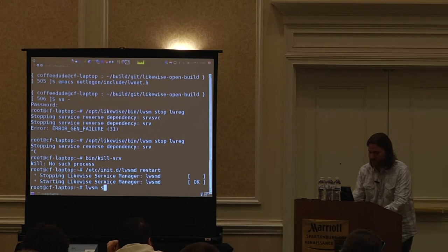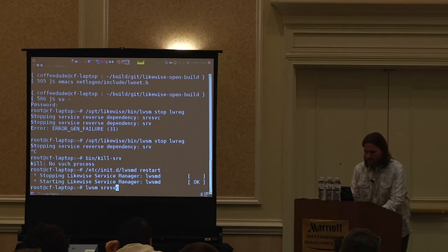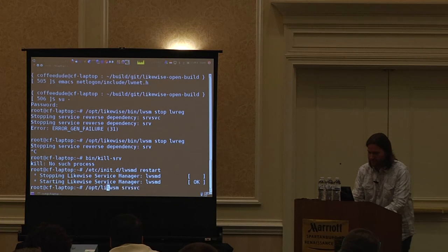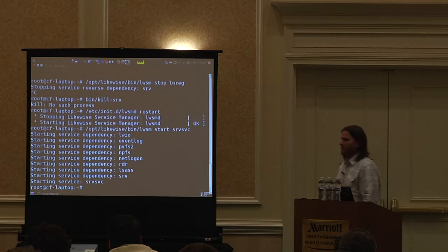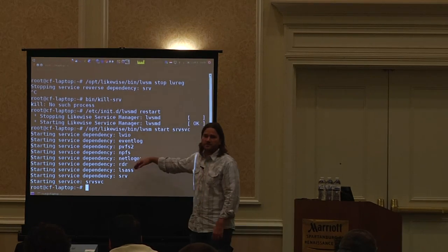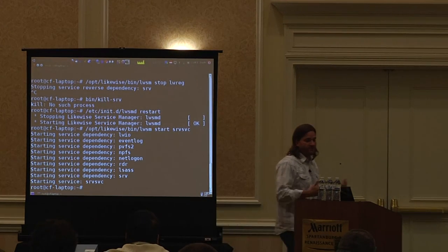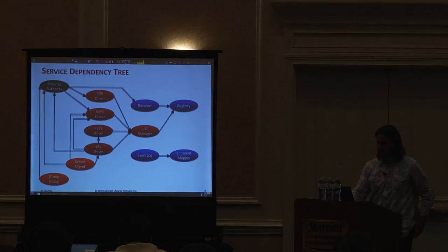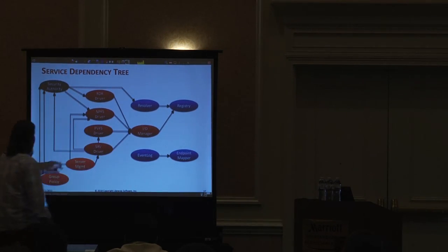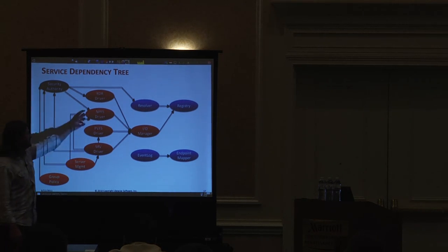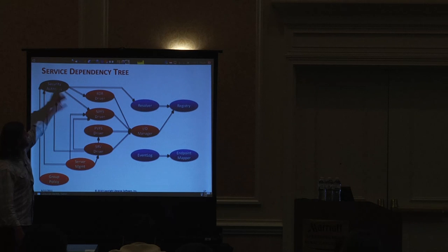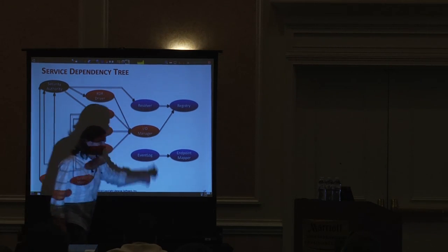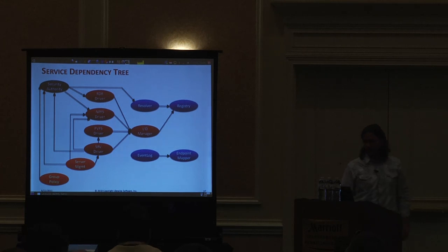If I want to start up the server service — the net share enum file shares kind of thing — I can just say start up the server service and it'll go through and start all the services that it depends on. It maintains a directed graph of information. You can see that starting something like server management requires the security authority is started up as well as the name pipe file system. For the security authority to start up, it has to start several other things.